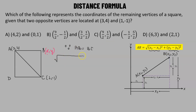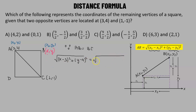For AB, we take the square root. We consider (X, Y) as (X2, Y2) and (3, 4) as (X1, Y1). So X2 minus X1 gives us X minus 3, squared, added to Y minus 4 squared. This equals the length BC, which is the square root of (X minus 1) squared plus (Y minus (-1)) squared, giving us (Y plus 1) squared.